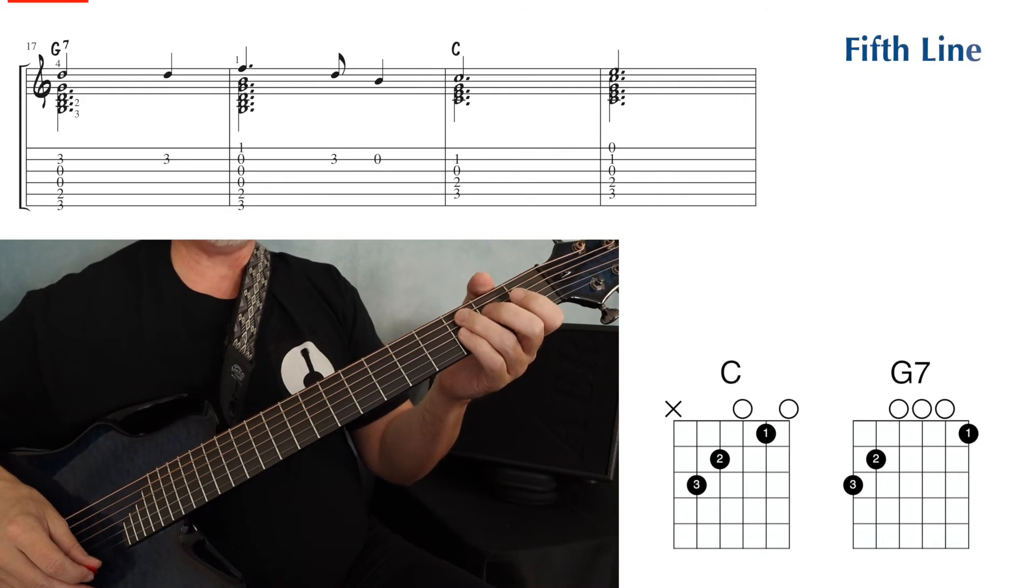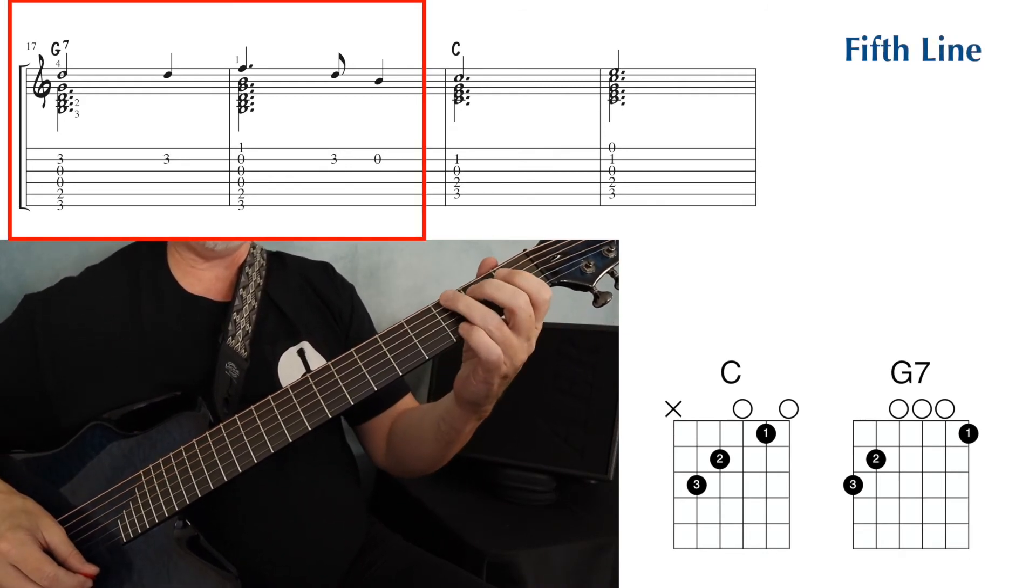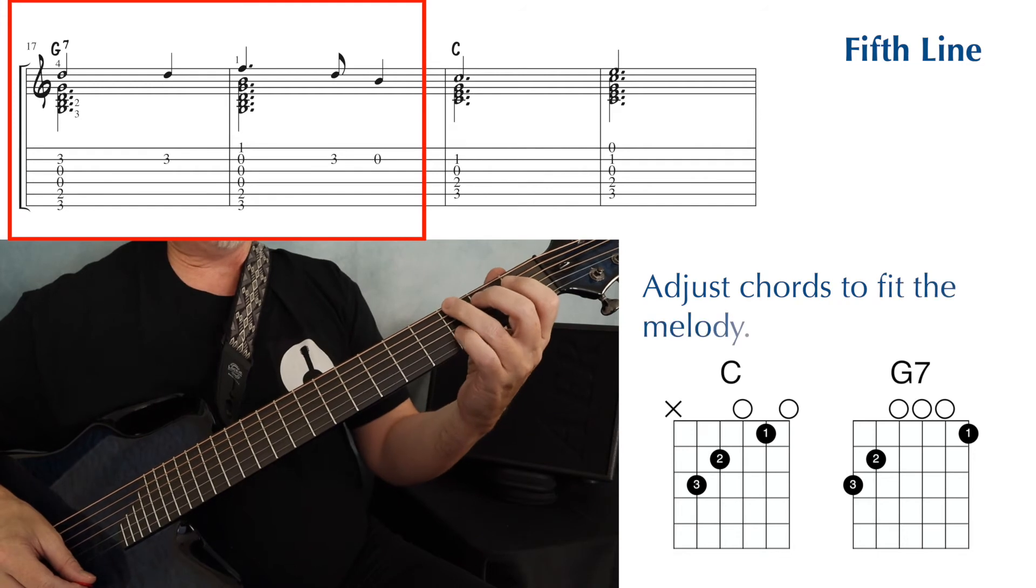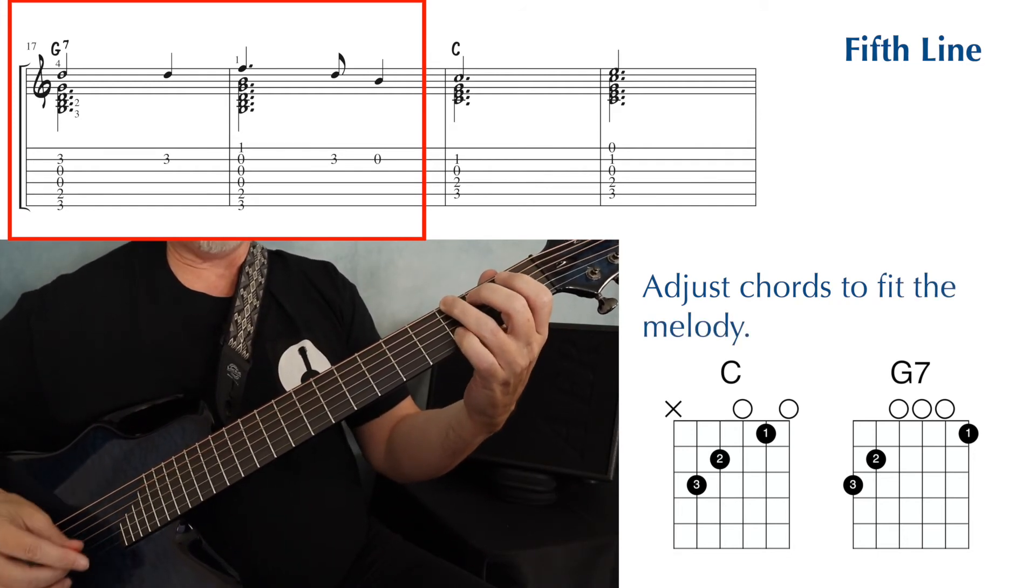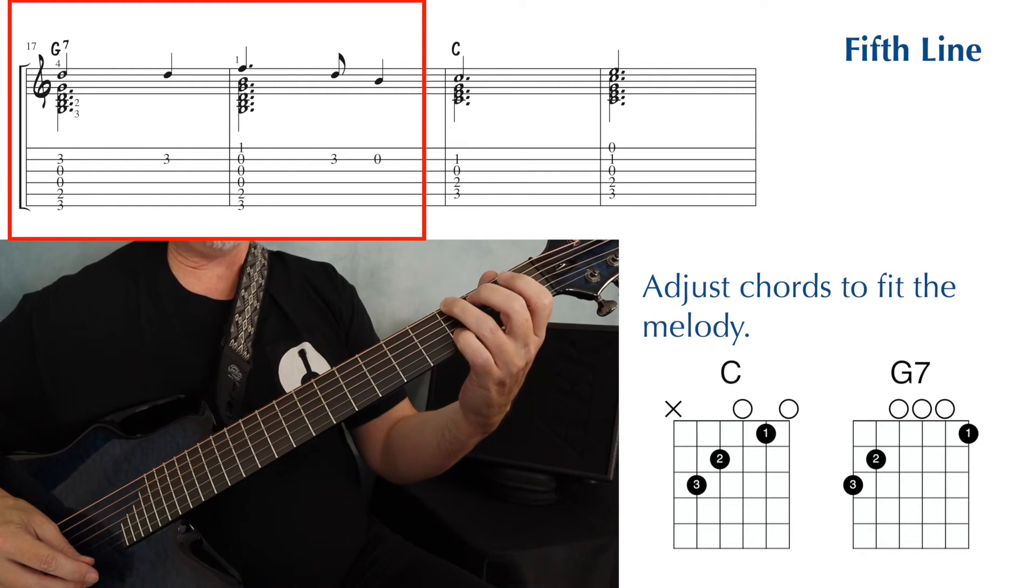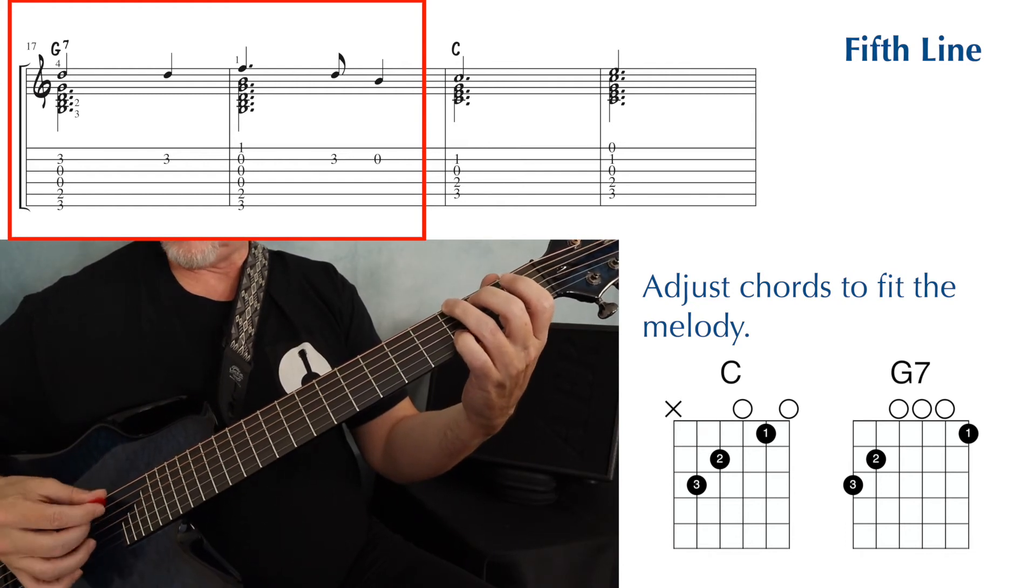Next we have a G7 chord, although it's technically not a G7 until the next measure. So we're playing this like we did the G chord earlier, fingers two, three, and four, but with our fourth finger on the third fret, second string for our melody note.